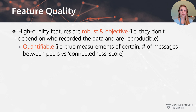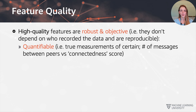On the previous slide we said we want to ensure data integrity, and one way to do that is by making sure we have features of the highest quality possible. But what does it really mean for a feature to be high quality? It means the feature should be robust and objective — it should not depend on who is recording the information, and it should also be reproducible. First, features should be quantifiable: they should be true measurements of certain characteristics, such as the number of messages between peers, versus using something subjective like a connectedness score. A subjective score might depend on who is recording it or even their mood. Wherever you can, use direct measurements that are also quantifiable.